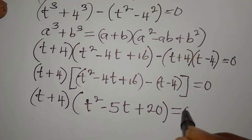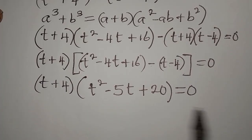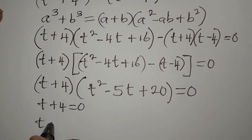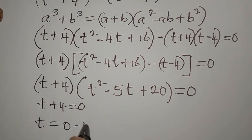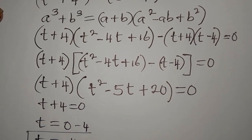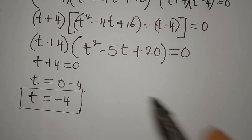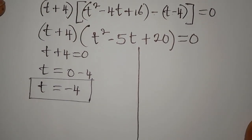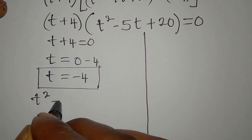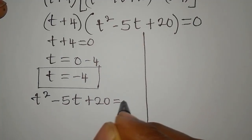Either factor equals zero. Setting t plus 4 equal to zero gives t equals negative 4. This is one of the solutions. To get the other solutions, we take t squared minus 5t plus 20 and equate it to zero, solving using the quadratic formula.